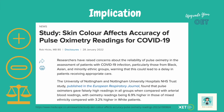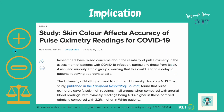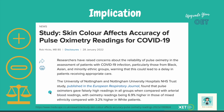Let's look at another article from the same website. This time it's a study about how skin colour affects the accuracy of pulse oximetry readings for COVID-19. Again, I want you to read through it and decide: is this article positive and in favour, negative and against, or balanced? Are there any implications? What do you think?